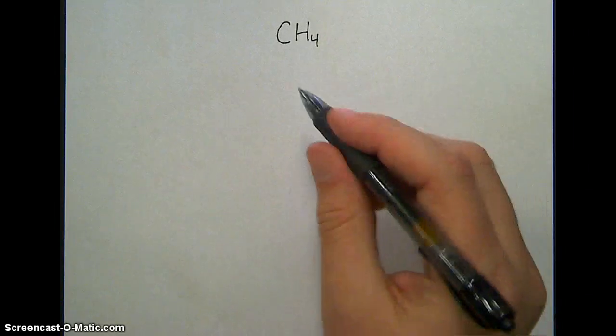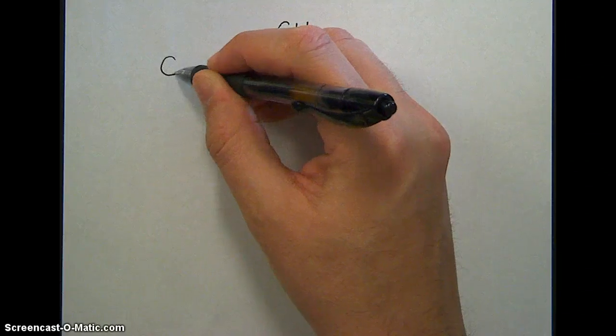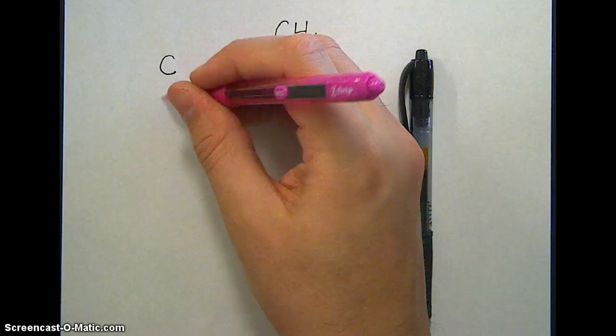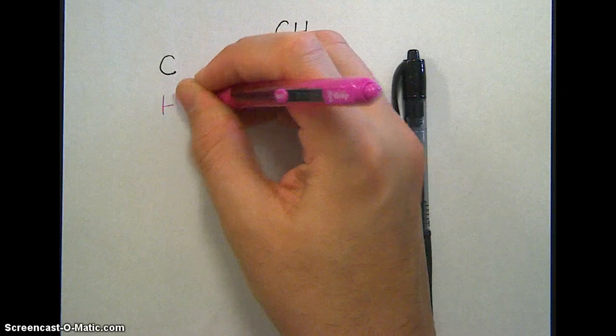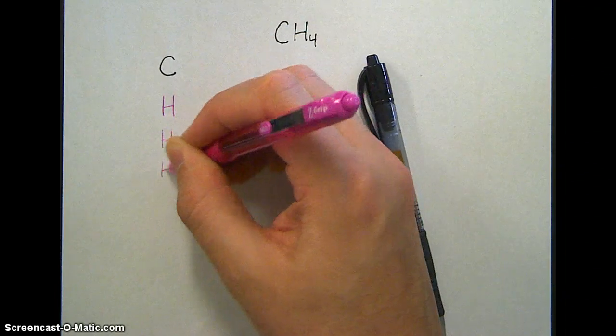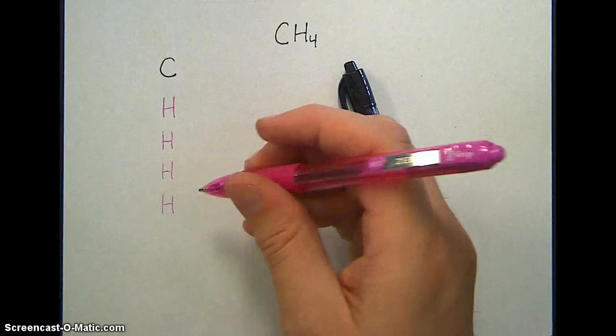The first step is to write out the individual atoms involved. I'm going to use black for carbon and I think I've got a pink pen here for hydrogen. Let's get four of those. I listed four because there's four in the formula.